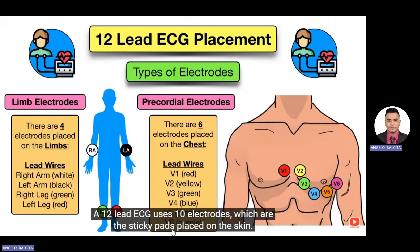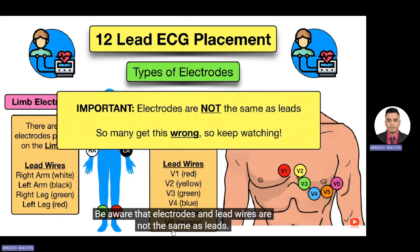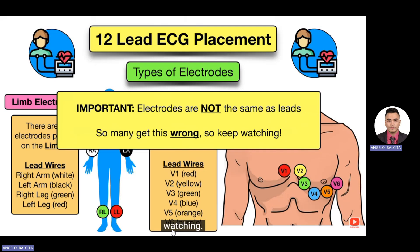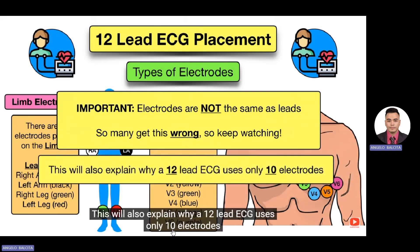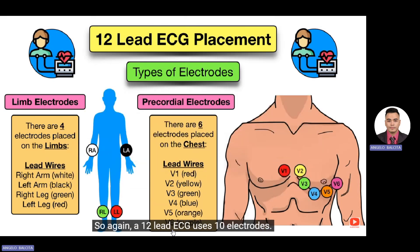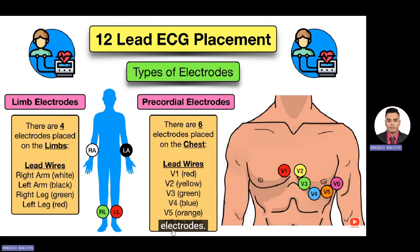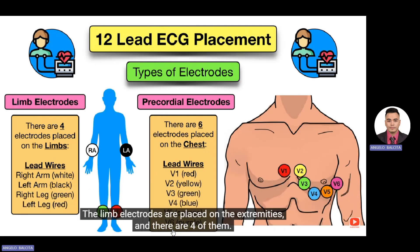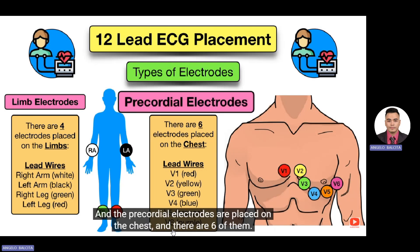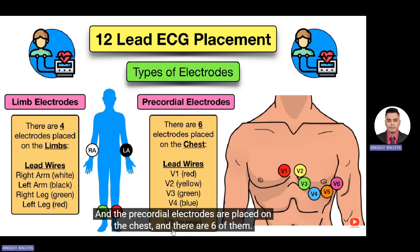A 12-lead ECG uses 10 electrodes — the sticky pads placed on the skin. Be aware that electrodes and lead wires are not the same as leads. A 12-lead ECG uses 10 electrodes, which can be divided into two types: the limb electrodes, placed on the extremities, of which there are four; and the precordial electrodes, placed on the chest, of which there are six.